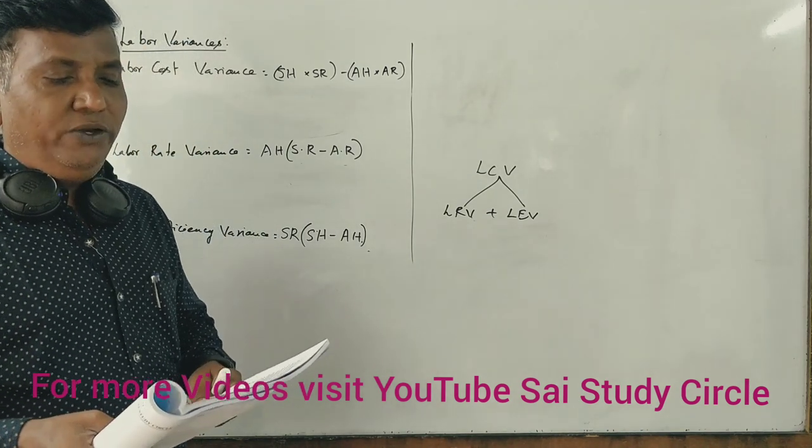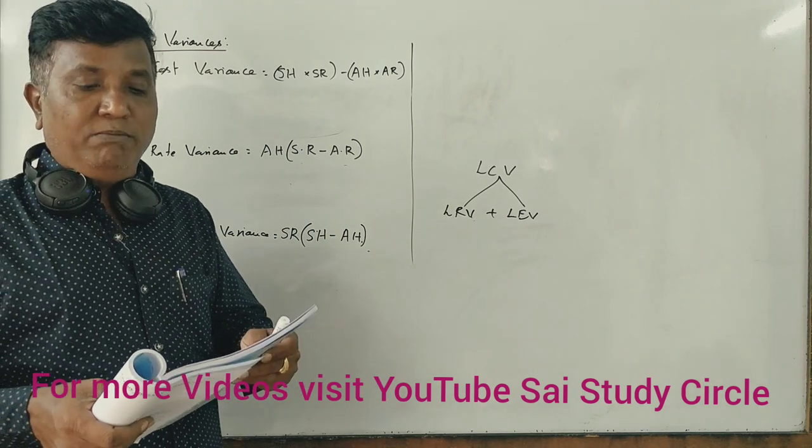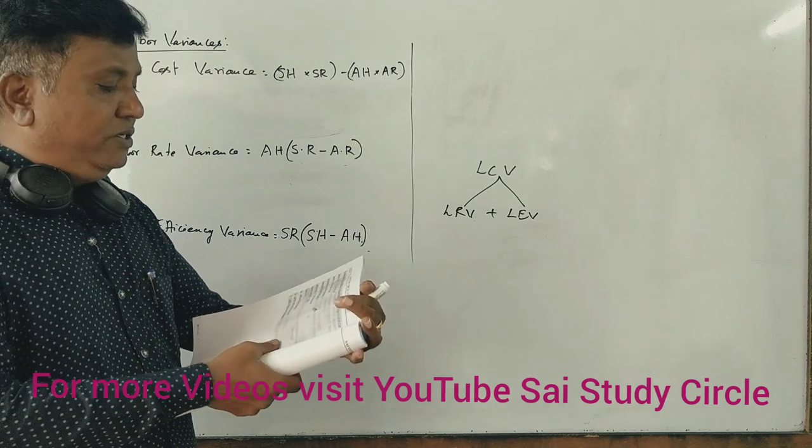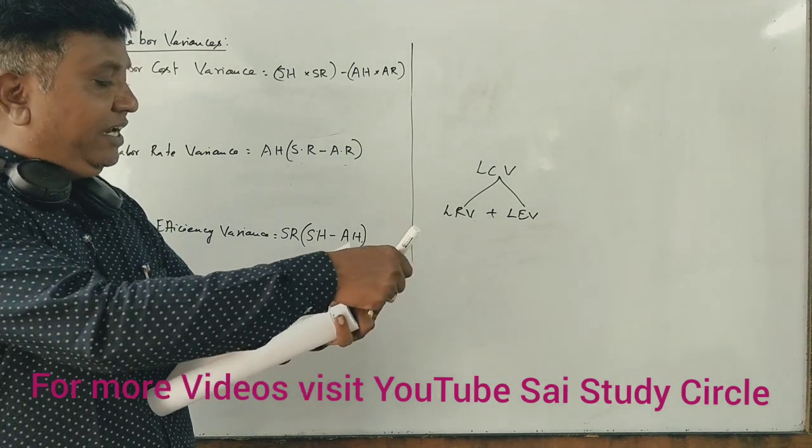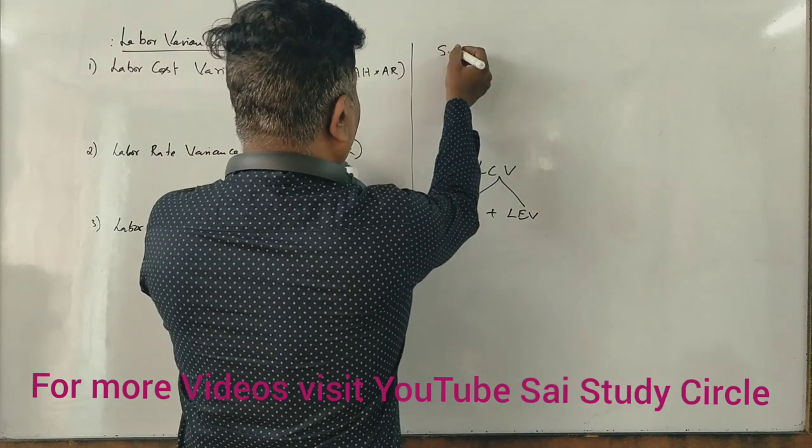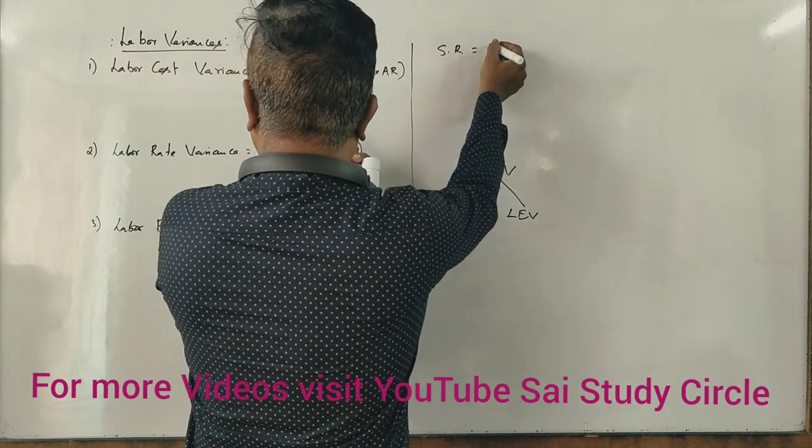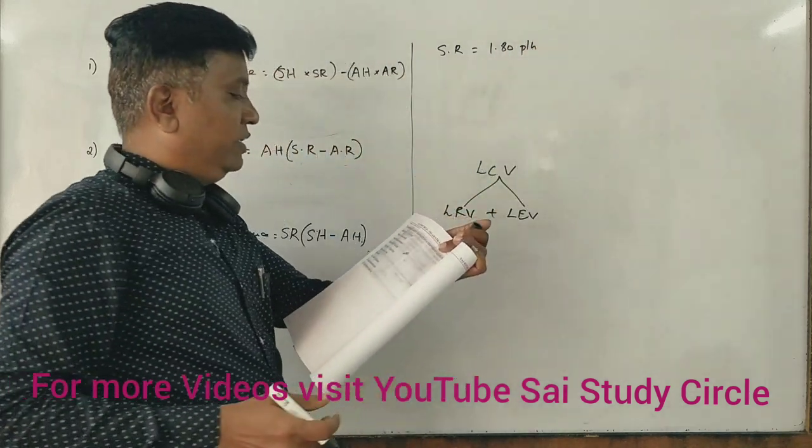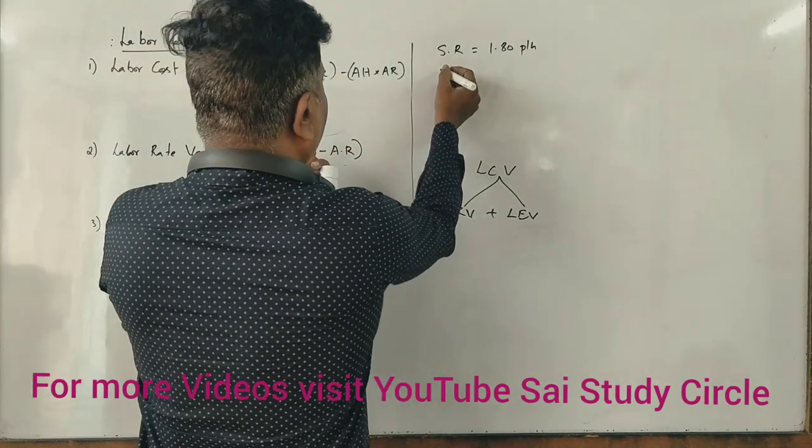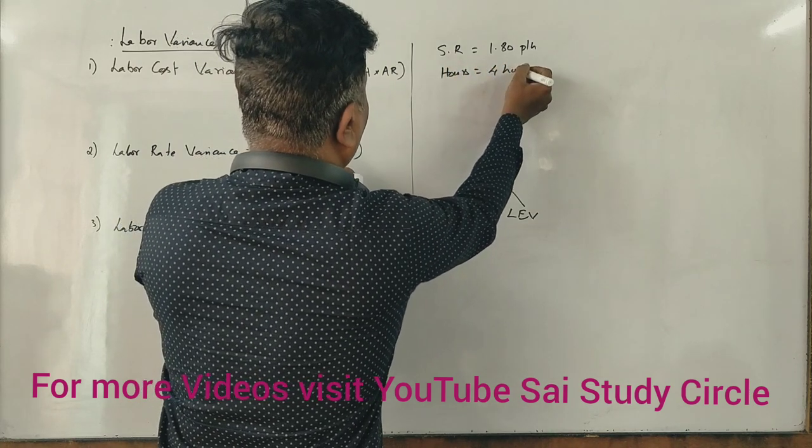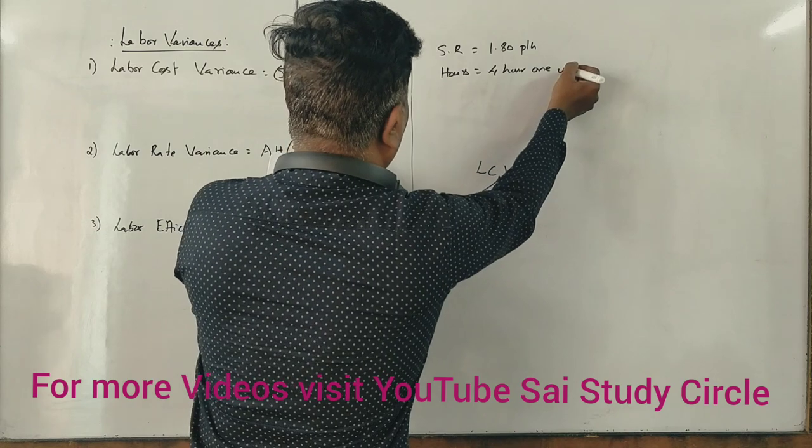The following information is obtained from a standard cost card. Labor rate variance: the standard cost is $1.80 per hour, the number of hours is 4 hours per 1 unit.